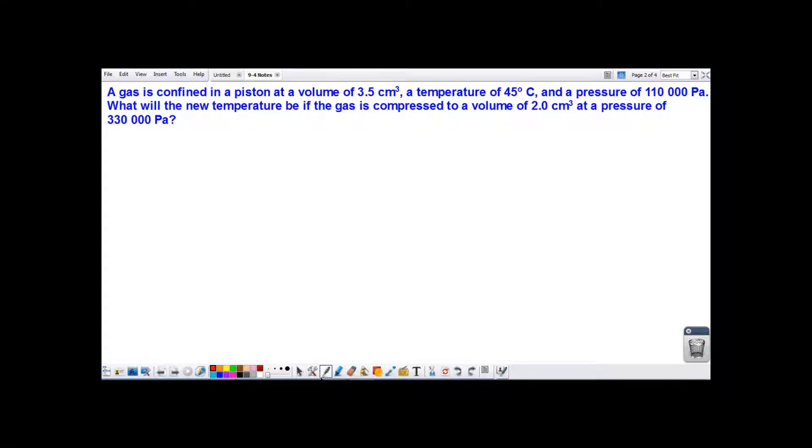A gas is confined in a piston at a volume of 3.5 cubic centimeters, a temperature of 45 degrees Celsius, and a pressure of 110,000 pascals. What will the new temperature be if the gas is compressed to a volume of 2 cubic centimeters at a pressure of 330,000 pascals?